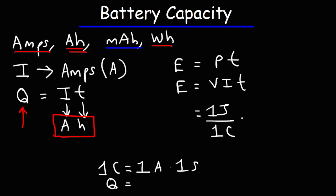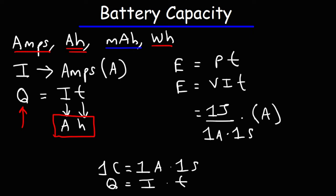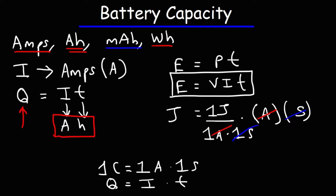Coulomb is the unit of charge, amps is the unit of current, and seconds is the unit of time. So charge is current times time. Replacing 1 coulomb with 1 amp times 1 second, and multiplying by current in amps times time in seconds, the unit that remains is joules — which is a unit of energy. So energy is voltage times current times time.